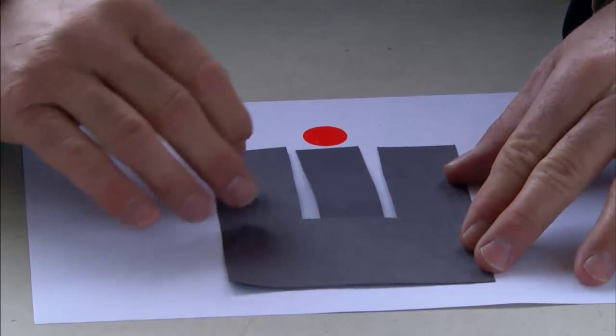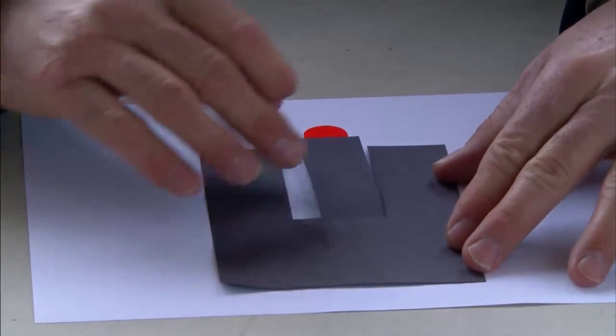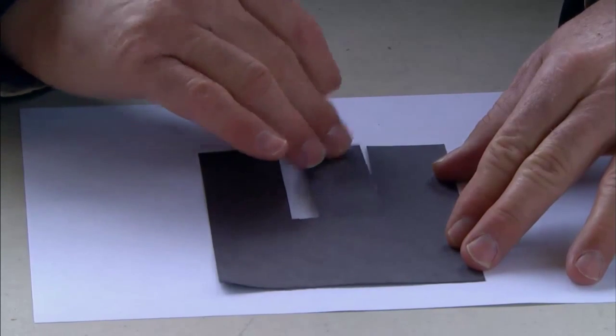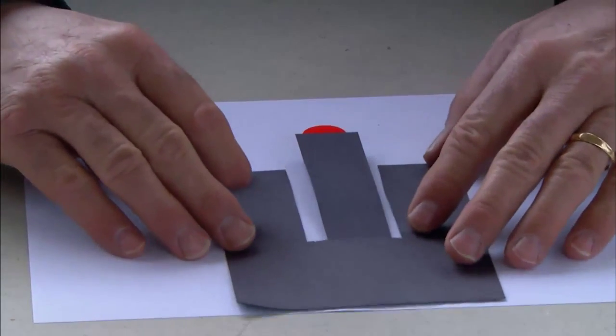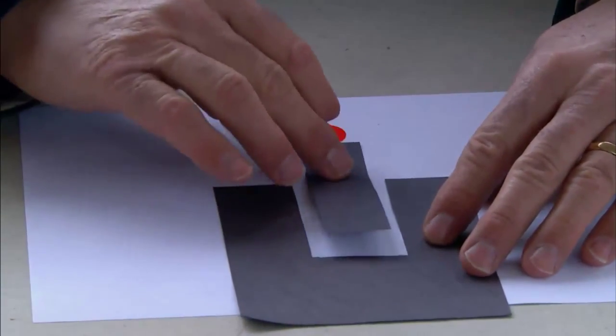What you don't want to do is have an unequal space of light on either side of the rear sight. This will mean you're shooting left or right. You also don't want to have the rear sight like this, otherwise you will shoot high.